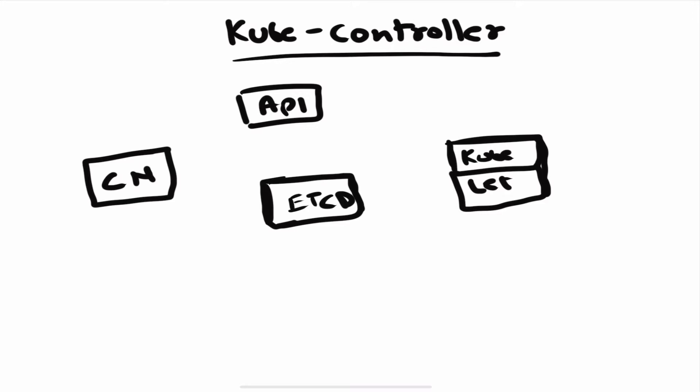There are many controllers inside the controller manager. If you list the pods in the kube-system namespace you would see a pod called kube-controller-manager, but inside that there are multiple controllers. You have a controller for pods, a controller for replication, a deployment controller, a node controller, and so on.